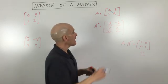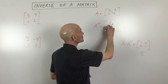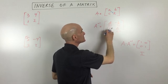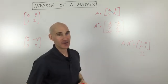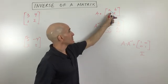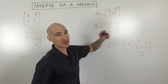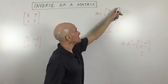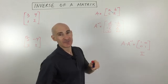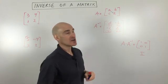A and D we switched. Then what you're going to do is divide all of these elements by the determinant of the original matrix, which is AD minus BC.